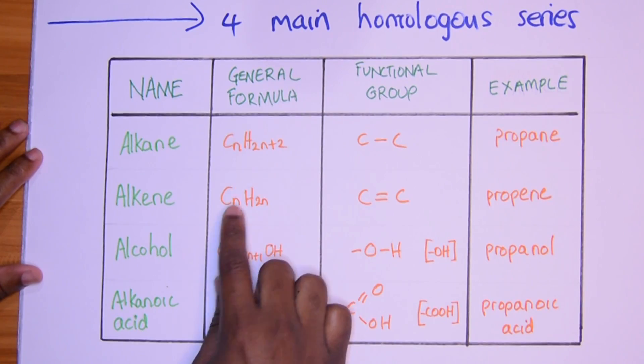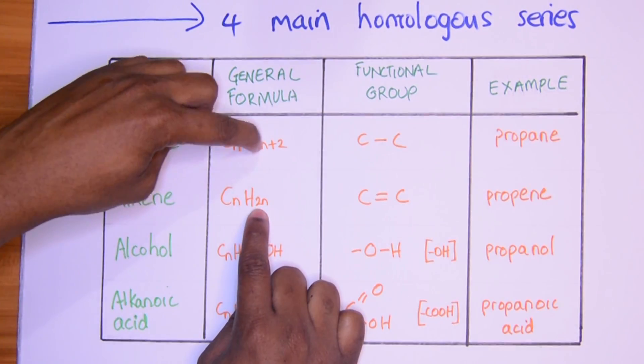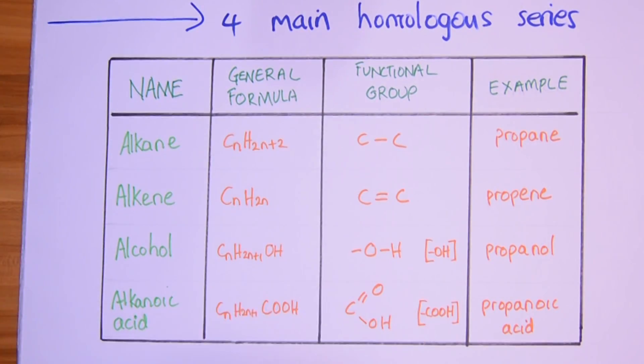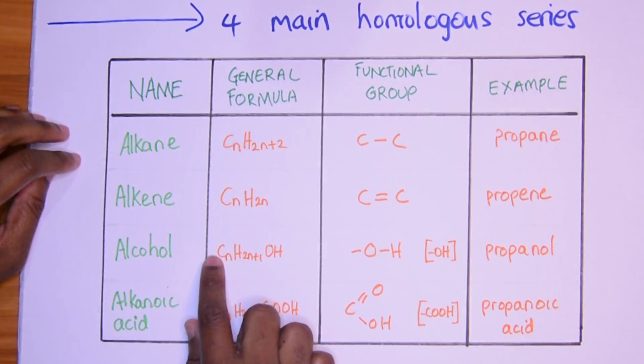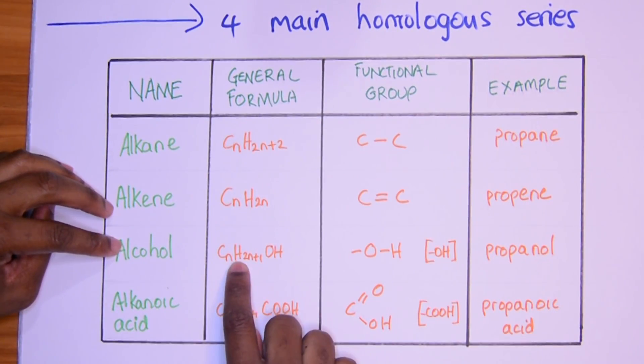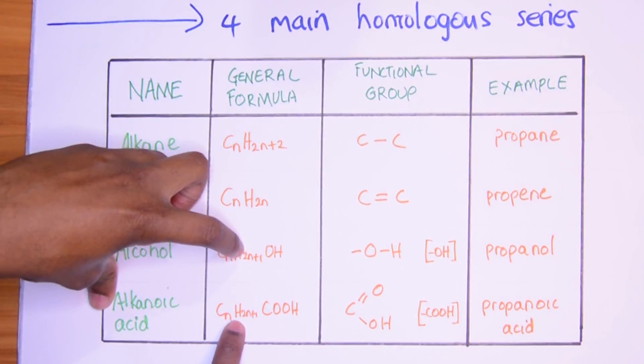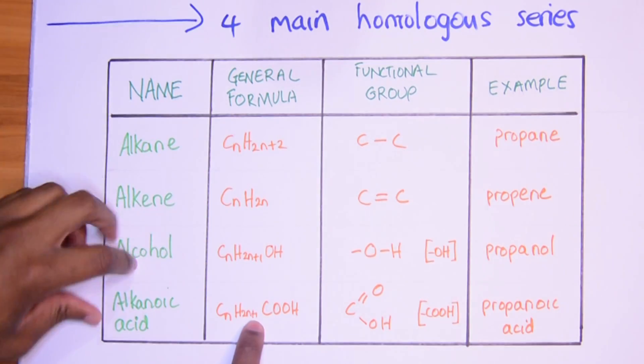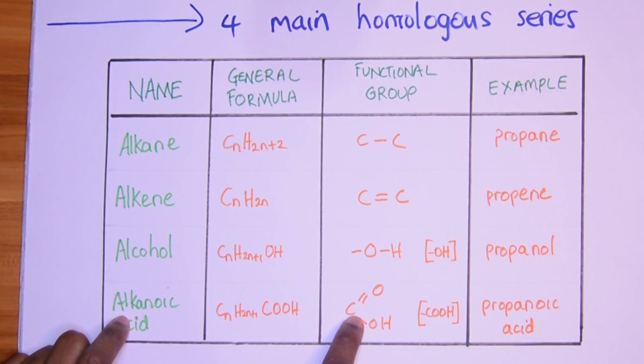General formula CnH2n+2, CnH2n. So we drop off the two when we go to alkene. That's because the double bond, it comes off. So we lost two hydrogens. And alcohol CnH2n+1. The last two are CnH2n+1. But the trick with this one, the alkanoic acid, is that the carbon is a part of the functional group, as opposed to the alcohol, which is just OH.